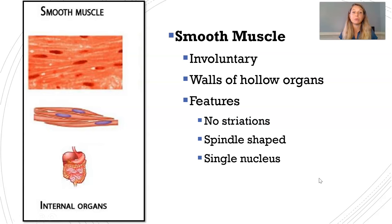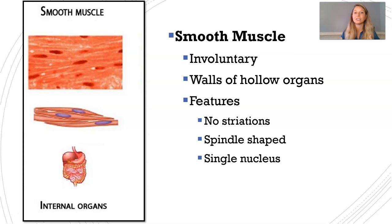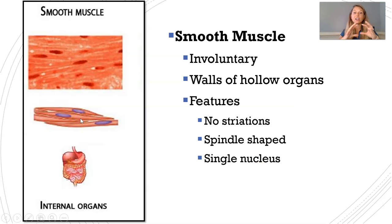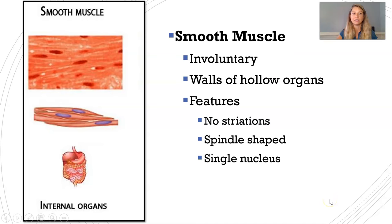Our last muscle tissue type is smooth muscle. This is also involuntary because it's found in the walls of hollow organs, and we don't need to consciously think about those muscles contracting to move materials through them. The unique thing about smooth muscle is that there are no striations. The elongated cells taper at the ends, so we call them spindle-shaped. Smooth muscle cells are typically uninucleate, with a single nucleus.